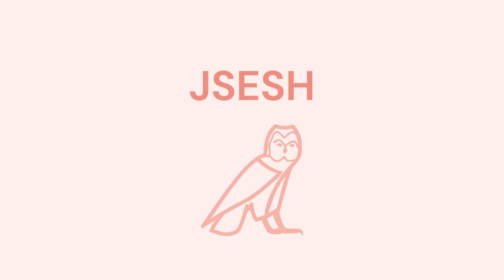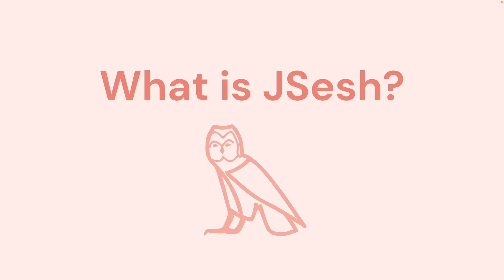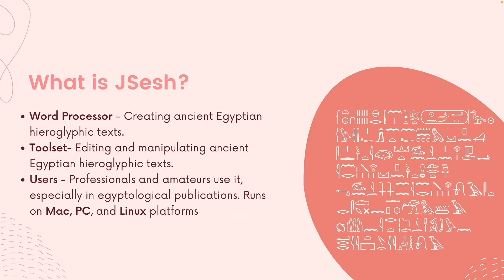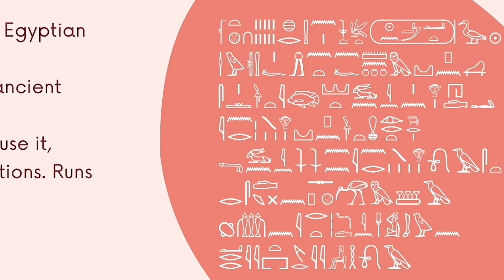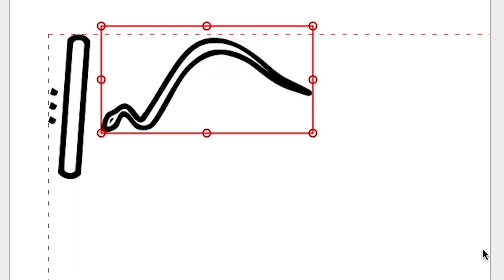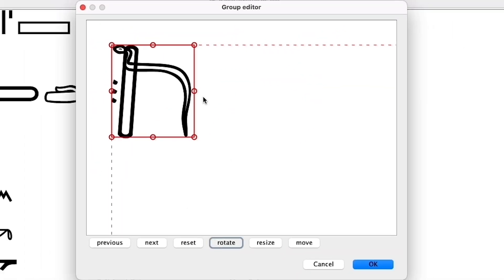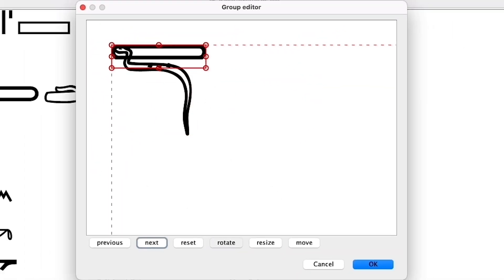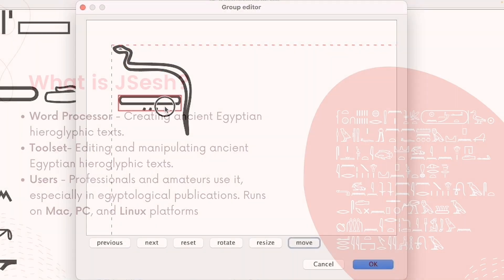In this lesson, we are going to look at what JSESH is. JSESH is a word processor used for creating ancient Egyptian hieroglyphic texts. The hieroglyphic text you see on your right is an example of what has been created using JSESH. It is also a toolset used for editing and manipulating ancient Egyptian hieroglyphic texts.